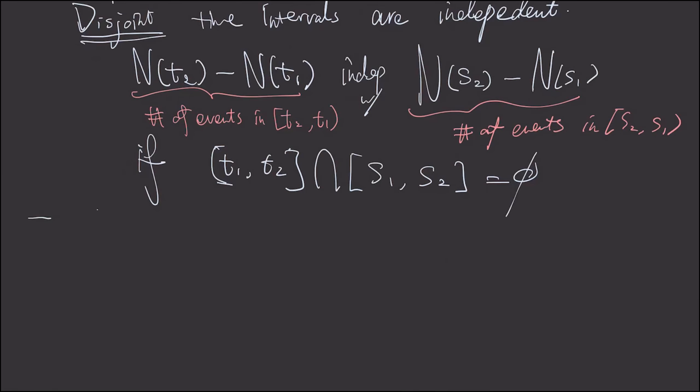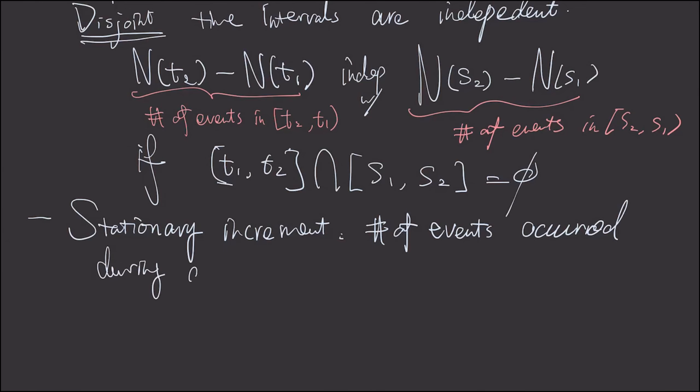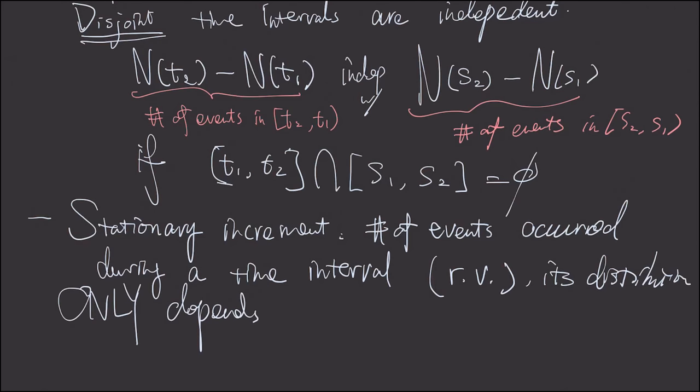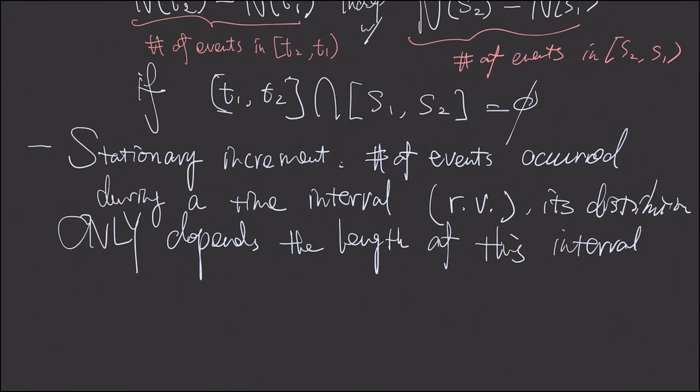So, next is called stationary increment. It simply says the following. It says a number of events occurred during a time interval. First of all, this is a random variable, random number. Its distribution only depends on the length of the interval. It does not depend on when this time interval started, but only the length of this time interval.